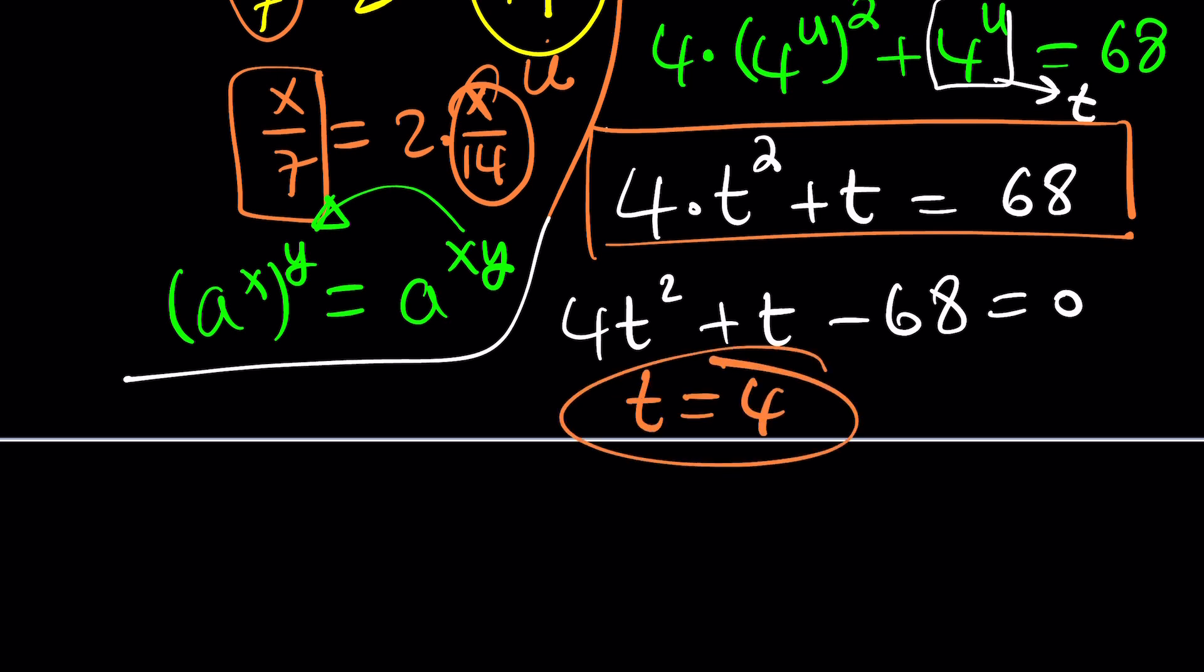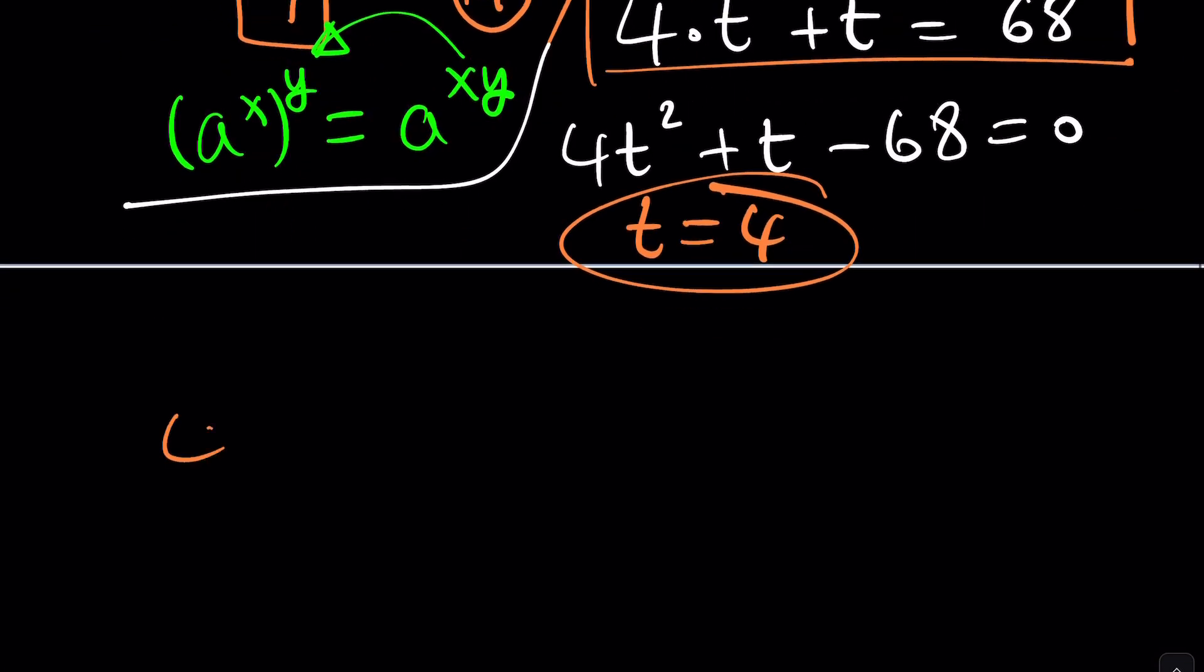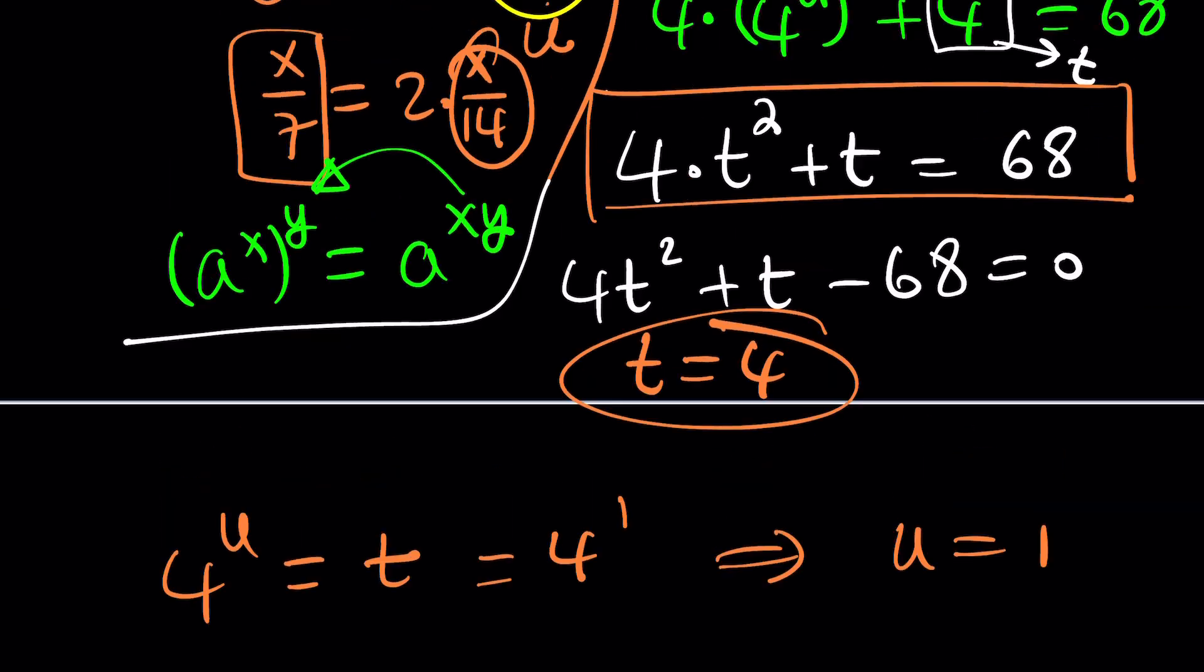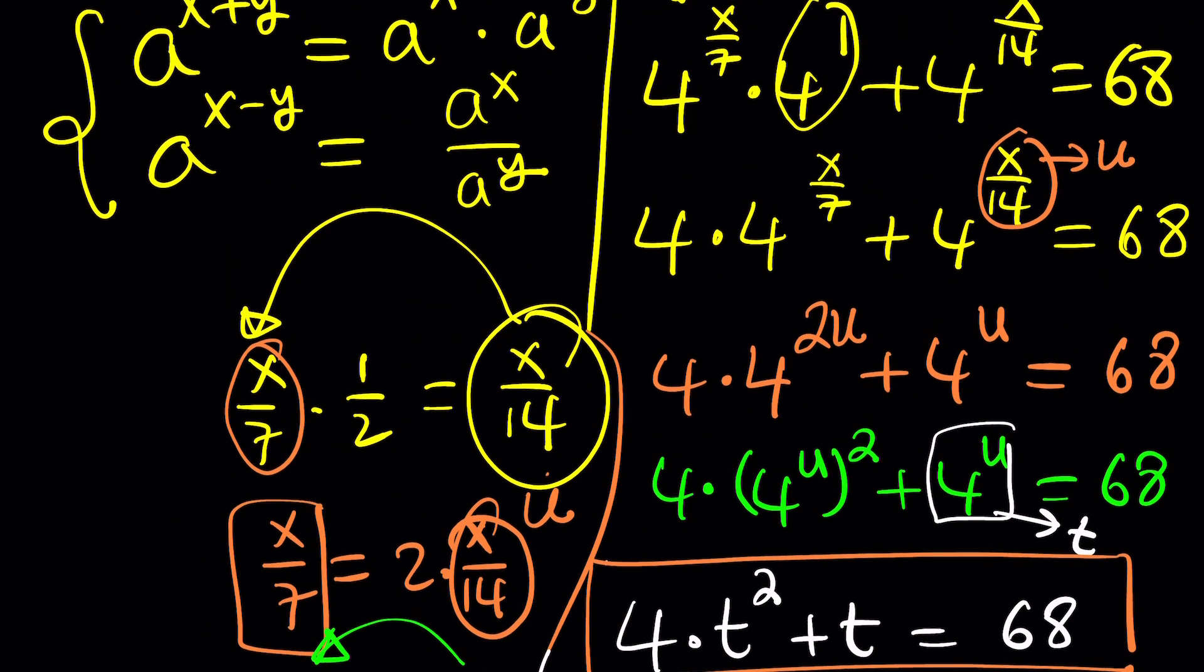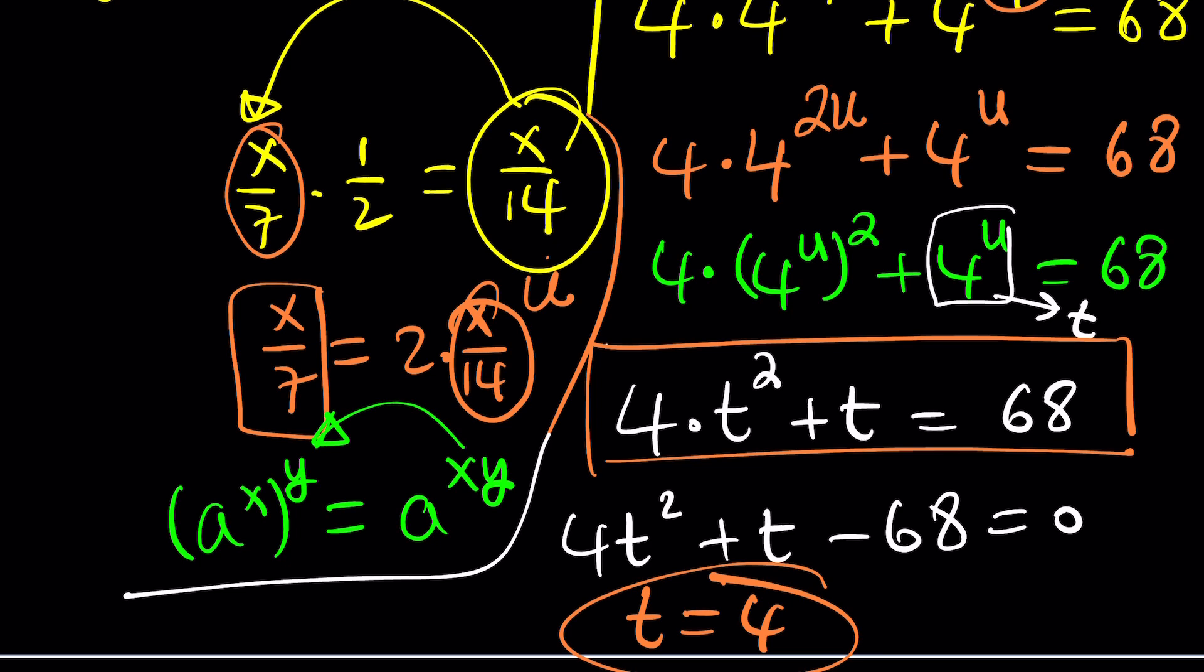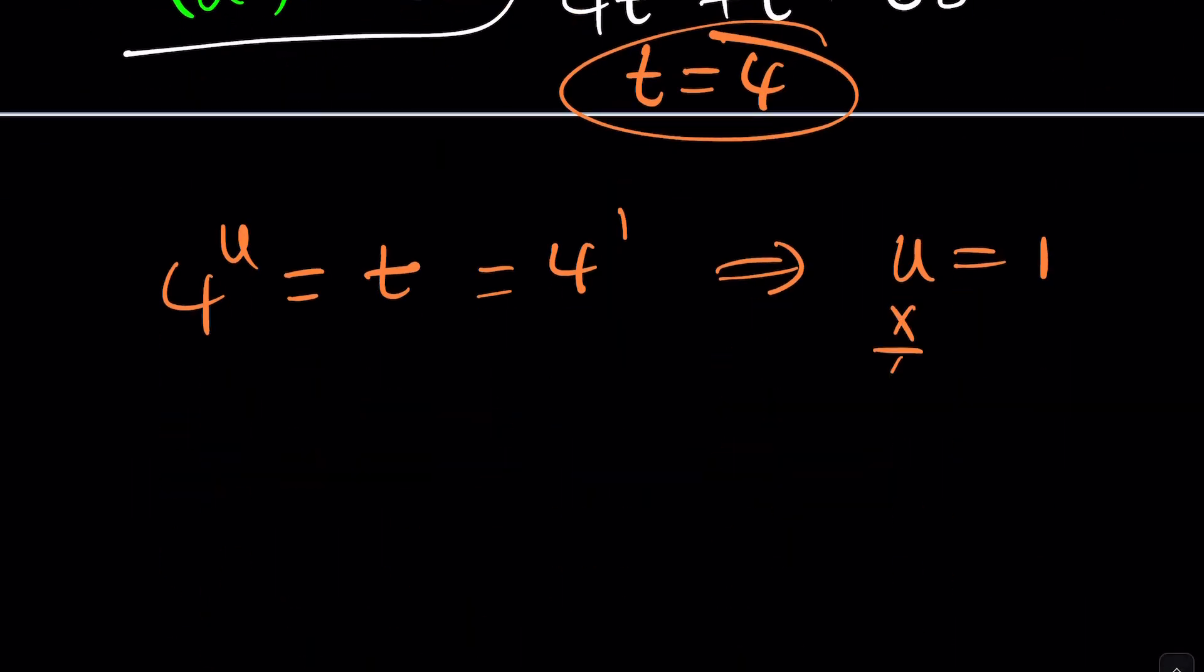What does that mean? Now let's roll the tape backwards. We have to back substitute. So 4 to the power u is equal to t. But t is equal to 4, which means 4 to the power u is 4 to the power 1, which means u equals 1. Okay? So u is 1. You are not 1. U is 1. And now you remember that movie? Okay. You are you and I am me. Whatever. Something like that. So u equals 1, and then u is x over 14. Look at that. So now we can go ahead and replace u with x over 14. Set it equal to 1 and you get x equals 14. Nice.